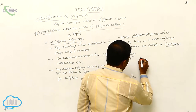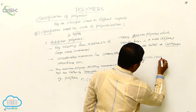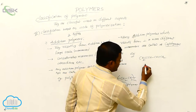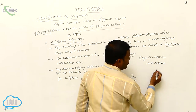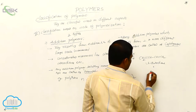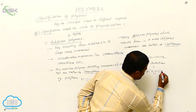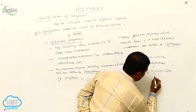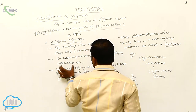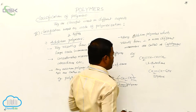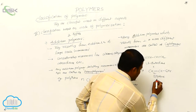An example of a copolymer involves 1,3-butadiene (CH2=CH-CH=CH2) reacting with styrene (CH2=CH-C6H5). 1,3-butadiene is an alkadiene — an alkene with more than one double bond. This alkadiene reacts with styrene, and addition takes place between these two different monomers.